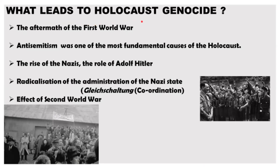Now talking about what actually led to the Holocaust genocide — what are the main reasons it happened. The first reason is the aftermath of the First World War. In 1918, when Germany lost the First World War, many people within Germany, including Adolf Hitler, found this loss very difficult and humiliating to process. Instead, many looked for scapegoats to blame.